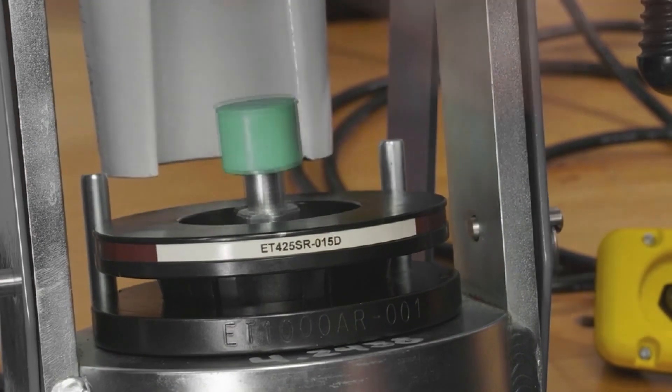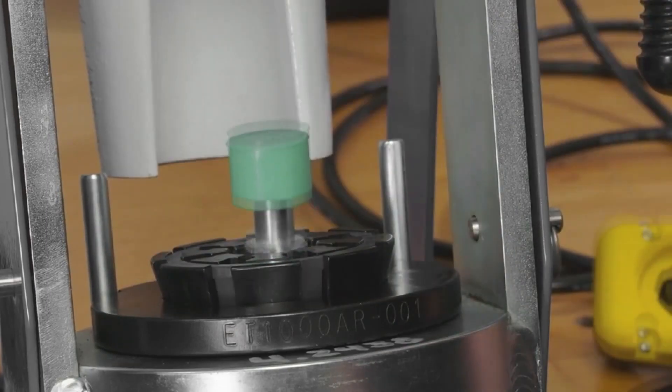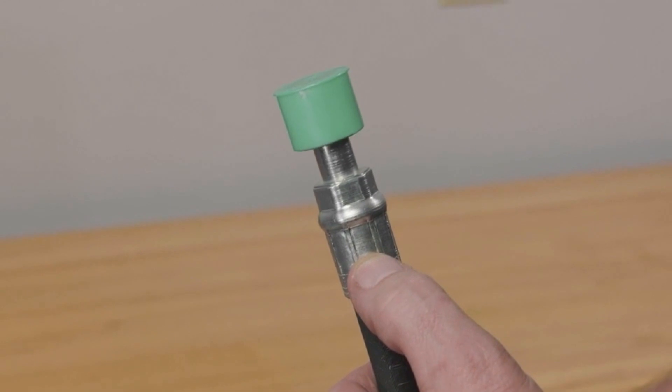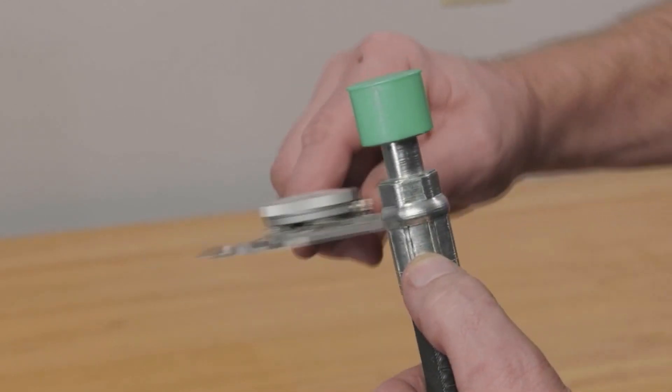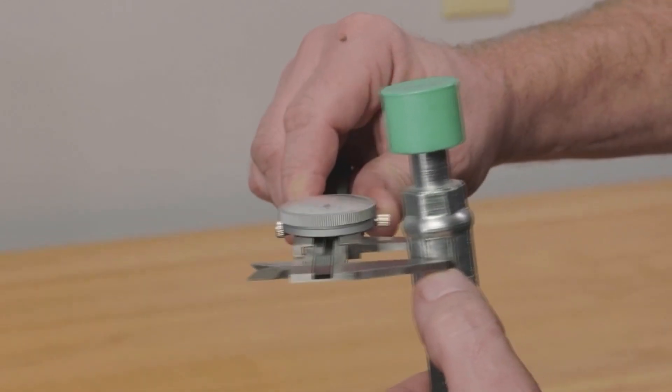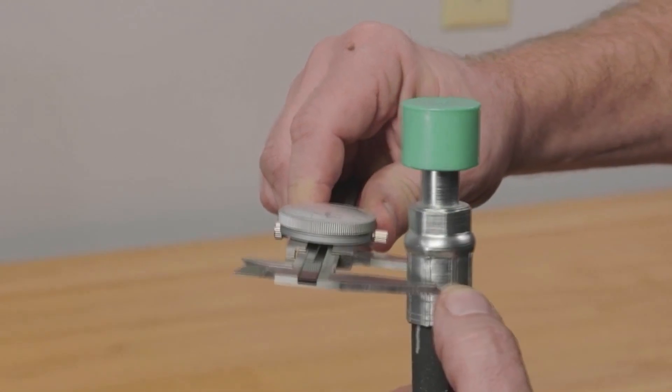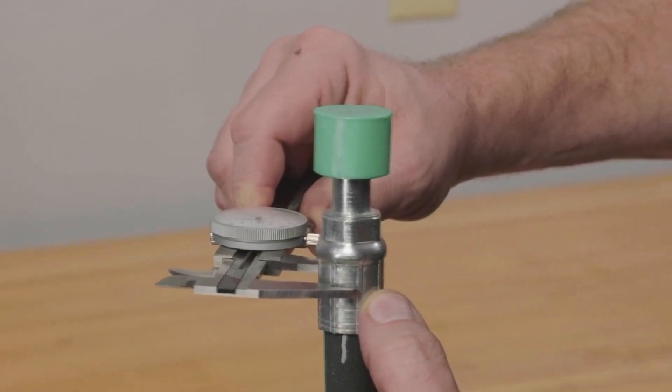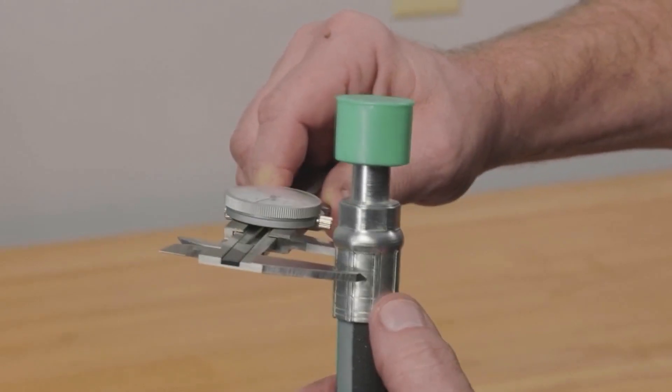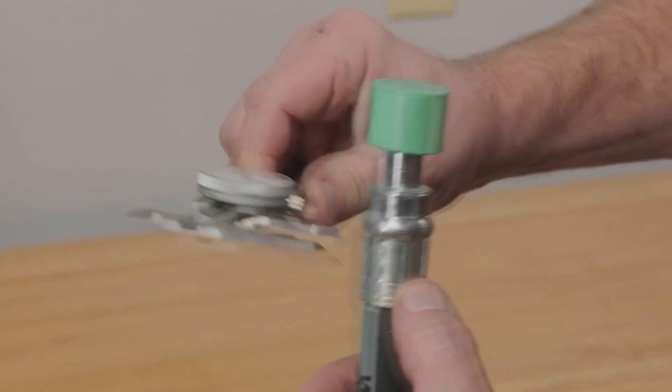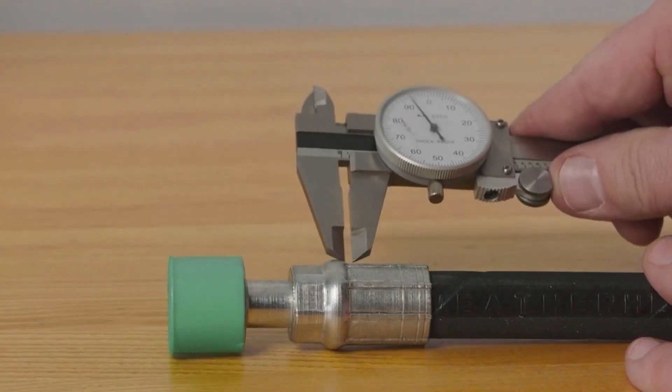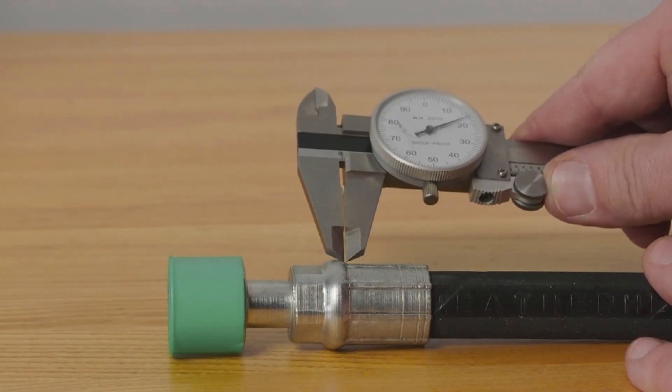After completion, measure the socket at the center of the crimped region to verify the achieved crimp diameter. Use calipers with additional fingers to get between the fins if necessary. Measure all of the sides and use the average of the four readings to ensure the diameter falls within tolerance. After measuring the diameter, check for proper crimp location.